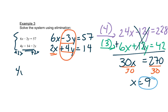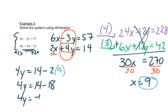So I'll say 4y is equal to 14 minus 2 times 9. So 4y equals 14 minus 18. Or 4y is equal to negative 4.